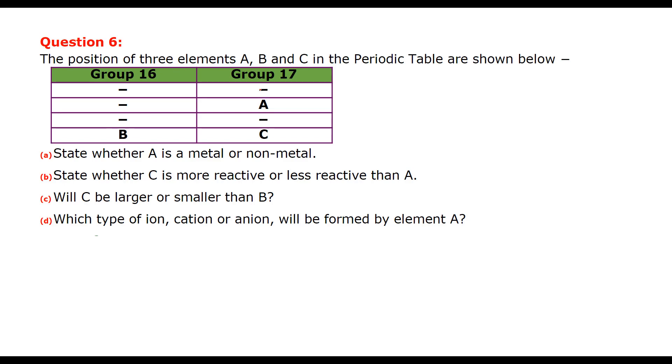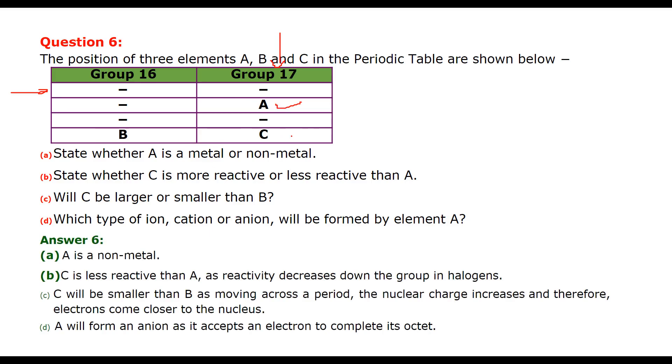The position of three elements A, B, C in the periodic table are shown like this. So this is a group and these are the periods. State whether A is a metal or non-metal. So as we see here, this is a non-metal. And then state whether C is more reactive or less reactive than A. Always in a group, the highest one is the most reactive, and the lowest in the group is the least reactive. So in this case, C will be less reactive as compared to A. Because the reactivity goes down or decreases down the group in halogen. Group 17 is actually halogen.